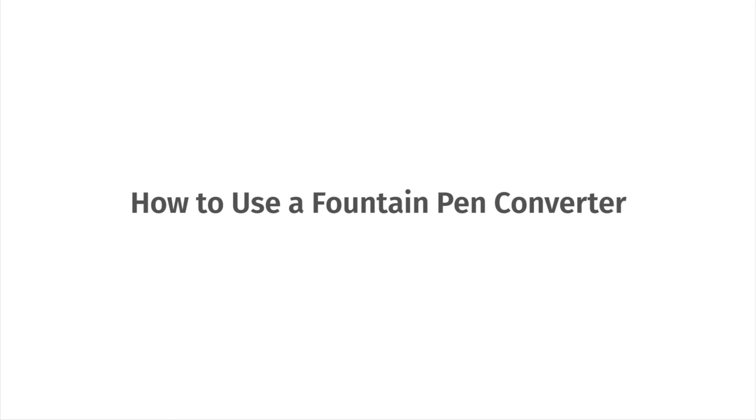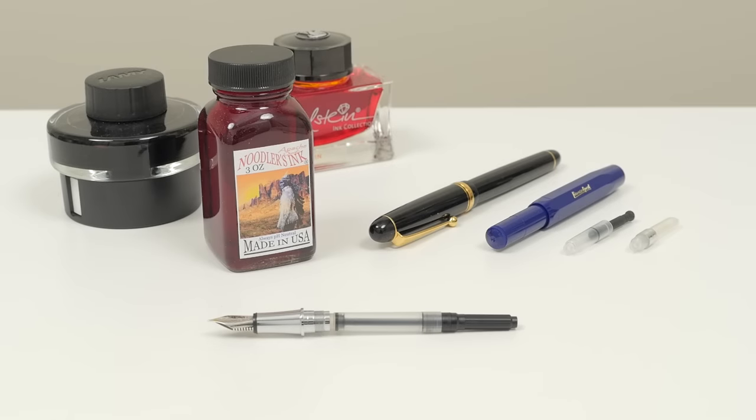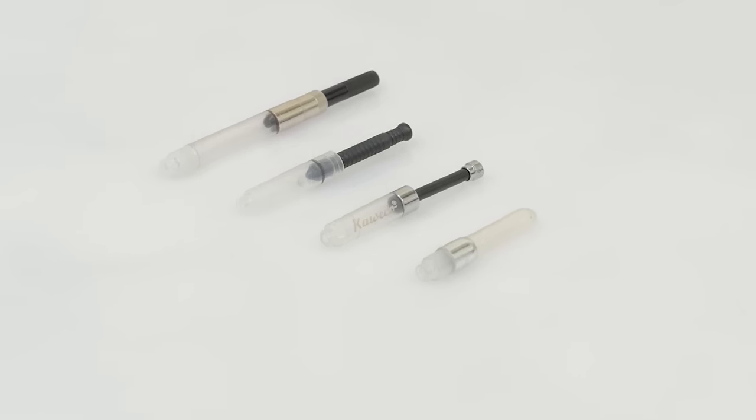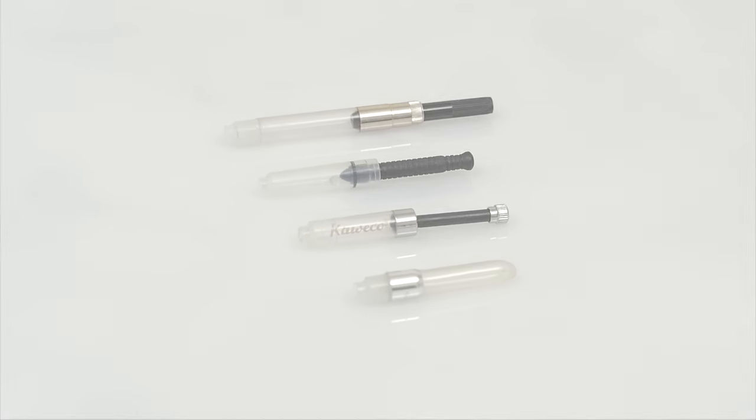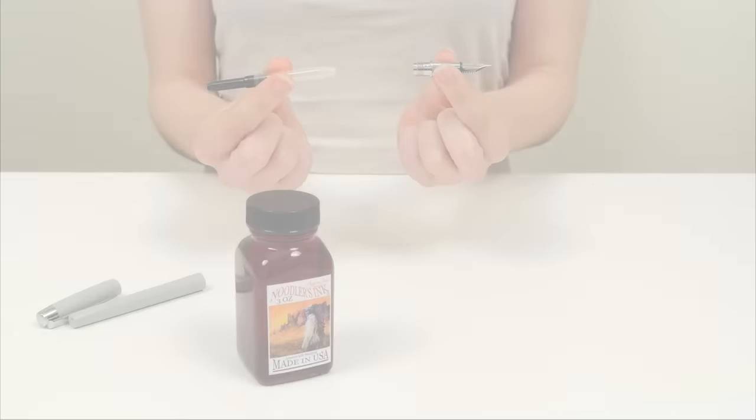How to use a fountain pen converter. Converters are handy tools that let you use cartridge-filled fountain pens with bottled ink. There are several types of converters, but for the most part they work the same way. First, insert the converter into your pen's grip section.